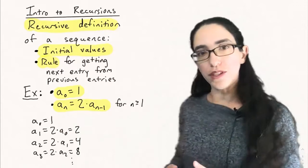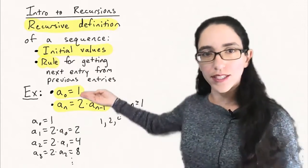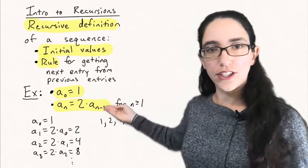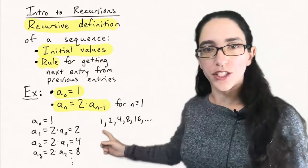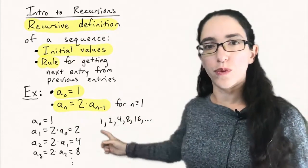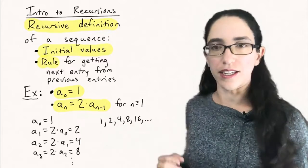We see that the sequence doubles each time. We can think of this as starting at 1, and then each time we double the previous number. And so we get the sequence of powers of two: 1, 2, 4, 8, 16, etc.